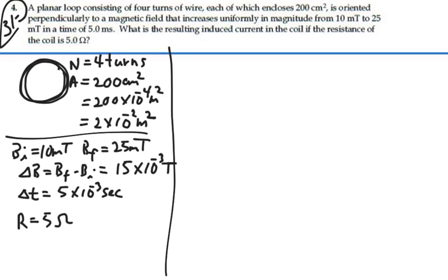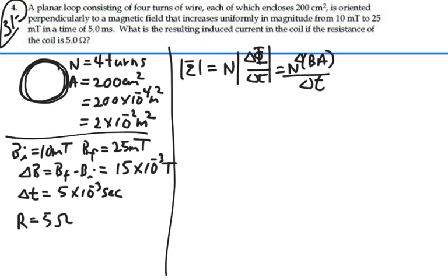By Faraday's law for average induced voltage, our average EMF is going to equal the number of turns times the change in magnetic flux over the change in time. In this case, it would be the number of turns times the magnetic field times the area, cosine of zero, over change in time. So that's going to equal the number of turns times the area times the change in magnetic field over change in time, because the area is going to be constant.